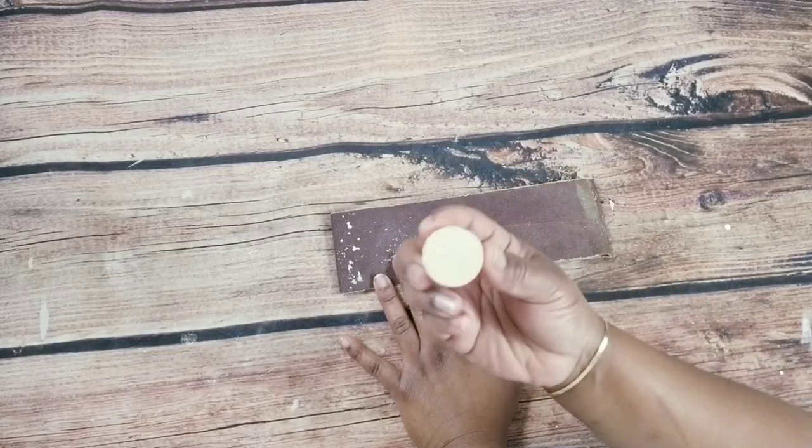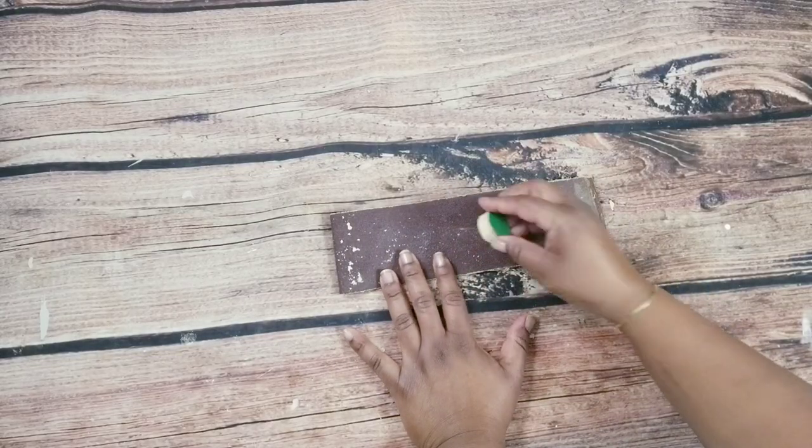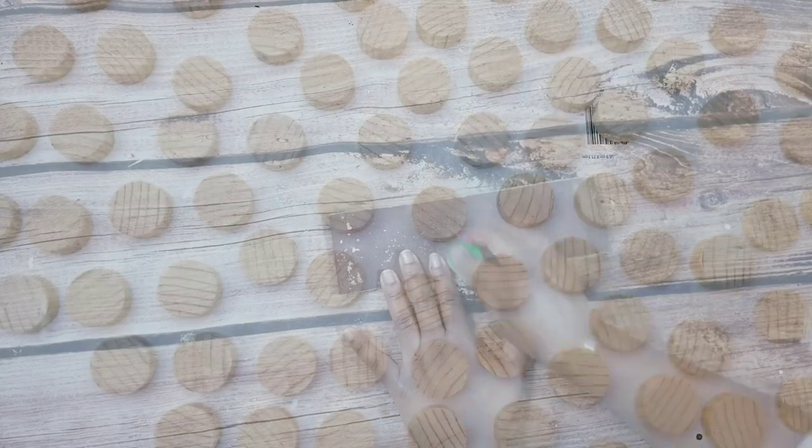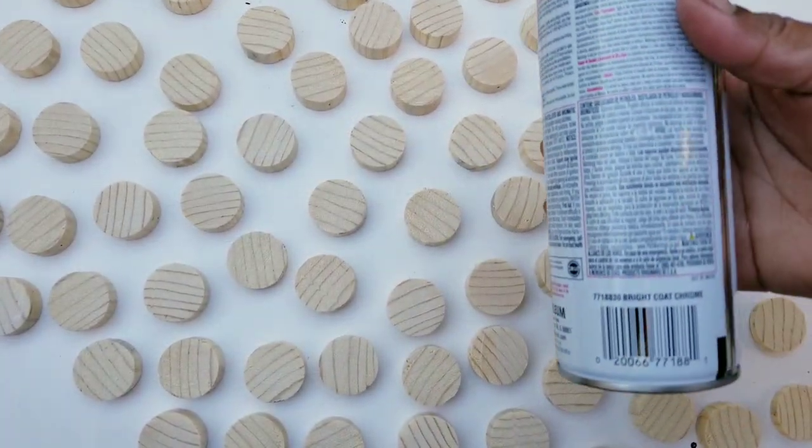And then I'll just use my 80 grit sanding paper to clean up the edges before I take them to spray paint. And I'll be using my Rust-Oleum chrome spray paint for this.